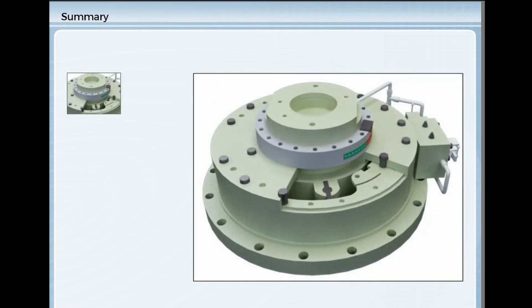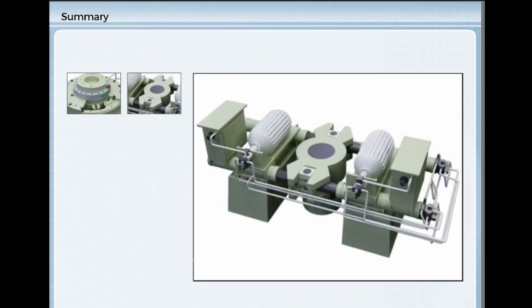In rotary vane steering gears, the pressure chamber is formed between the fixed and moving vanes. Ram-type steering gears use a piston or ram in a cylinder, but need some way of converting straight-line motion to rotary motion.